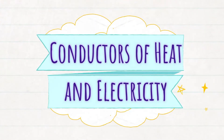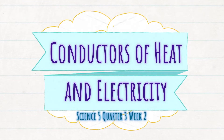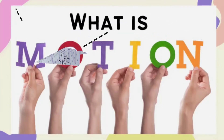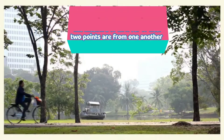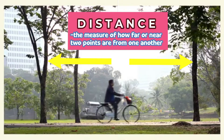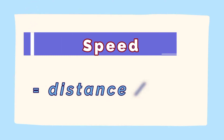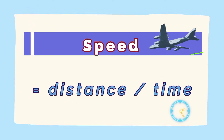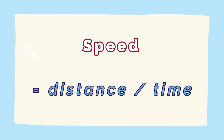Our lesson for today is about Conductors of Heat and Electricity. You learned in the previous lesson that motion is a change in position with respect to the reference point, while distance is the measure of how far or near two points are from one another. So that speed can be calculated by dividing the distance covered by an object in motion by the time spent over the distance.